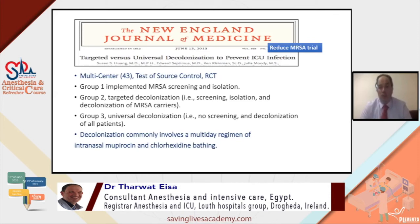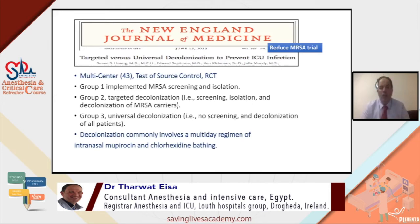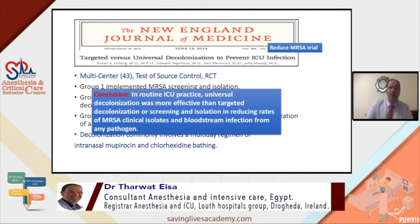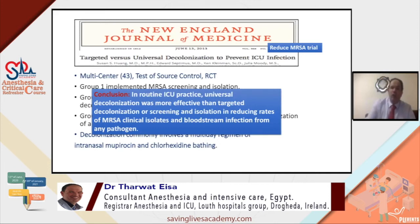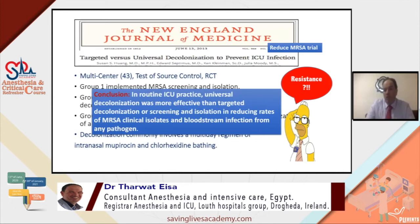A reduced MRC trial published in the New England Journal of Medicine — a multicenter RCT — randomized patients into three groups: MRSA screening and isolation; targeted decolonization using chlorhexidine bathing and mupirocin ointment; and universal decolonization without screening. They concluded that universal decolonization was more effective than targeted decolonization or screening and isolation in reducing MRSA isolates and bloodstream infection, though concerns remain regarding resistance.